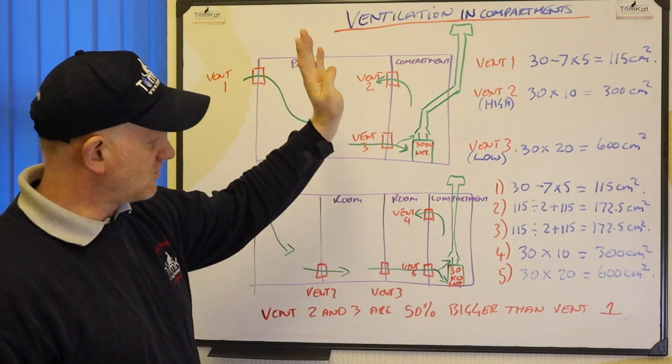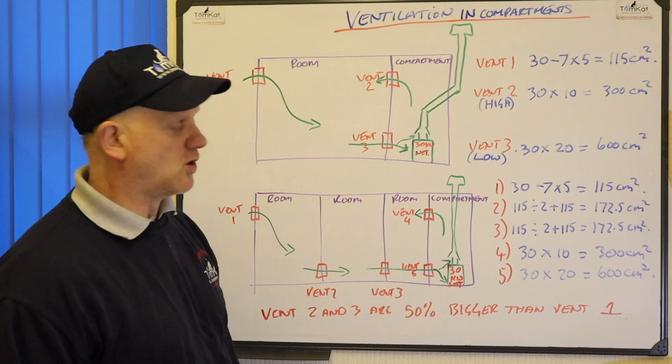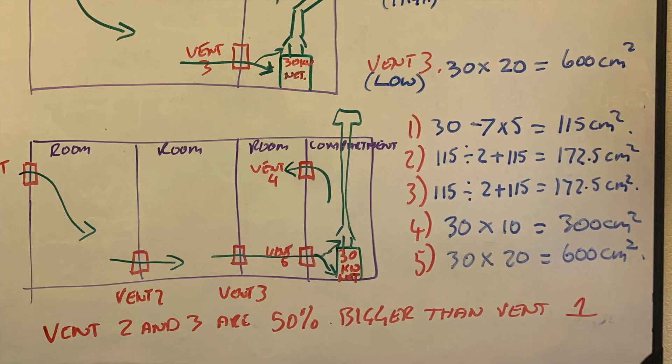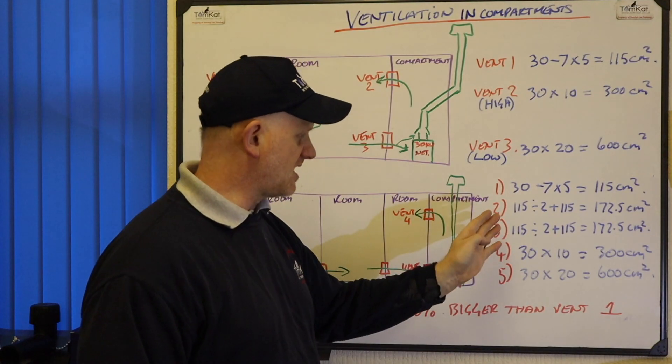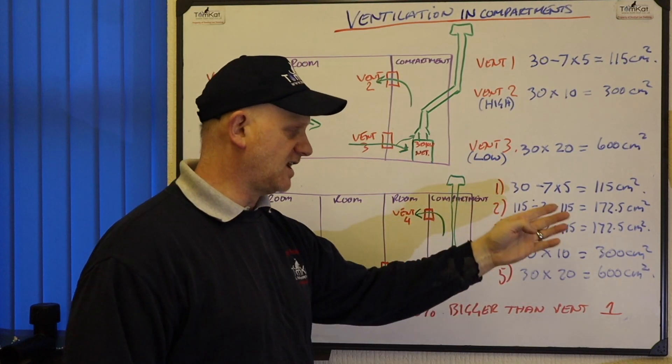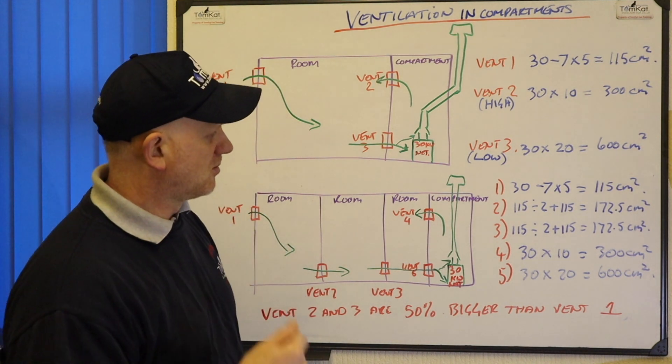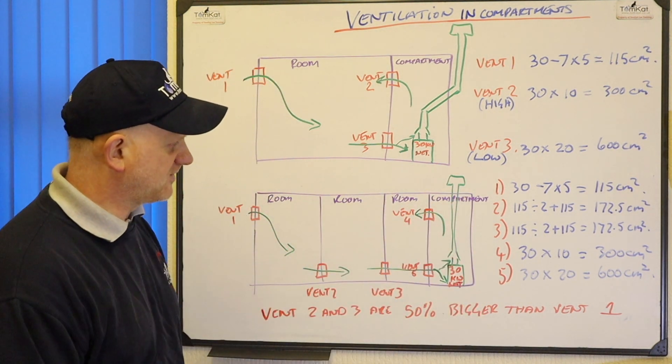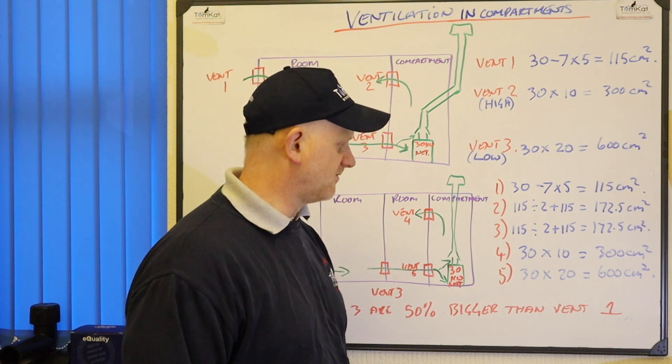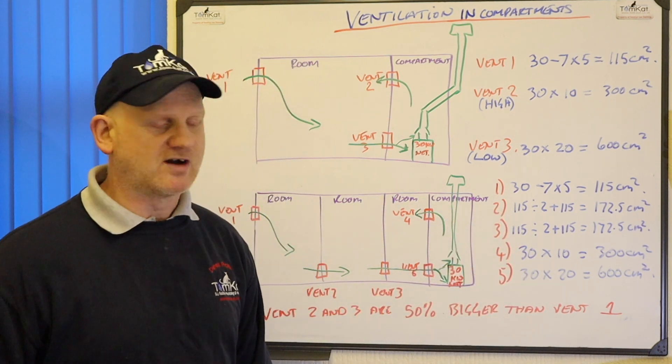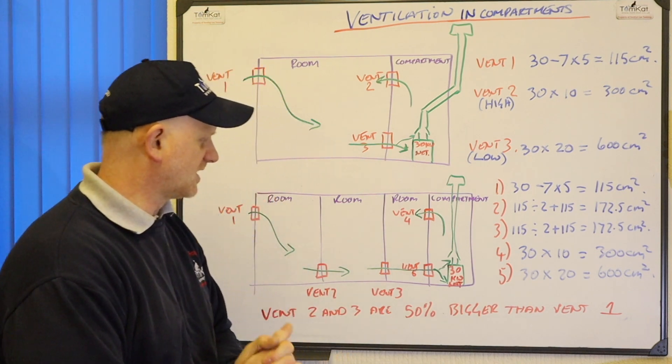So again if we look at this scenario it's the same boiler, it's a 30kW net. Vent number 1 which is the outside vent again will be 30 minus 7 times 5 is 115. Vents 2 and 3, as we say here, need to be 50% bigger than vent 1. So it's 115 divided by 2 plus the 115 is 172.5. Vent 3 is the same, 115 divided by 2 plus 115 is 172.5. So like we did in the first video of ventilation.